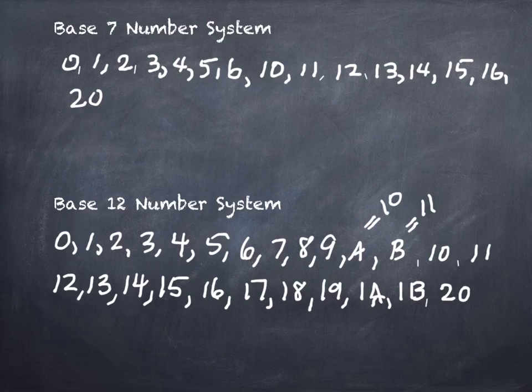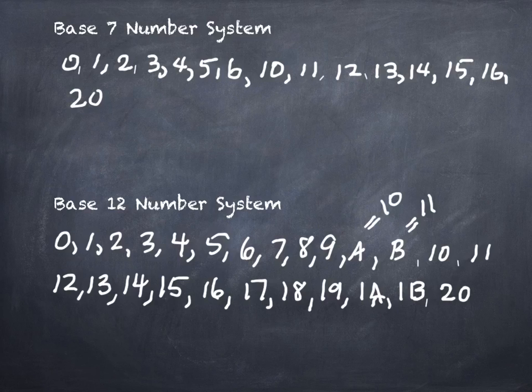Hexadecimal, base 16, is used in computer programming, and we're going to see a base 16 example in our discussion today. What's on the wall? A clock. A clock uses base 60 for seconds and minutes, and base 12 for the hours — it just repeats, starting over again on counting rather than going to a two- or three-digit number. Military time uses base 24. So you actually use a lot of different number systems without realizing it.